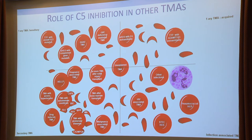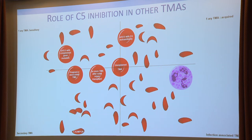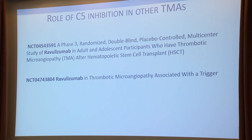What about C5 inhibition and other TMAs? This is why nomenclature is so important — different classifications mean different things to different people. In the clinical trials of eculizumab, most secondary causes disappear and you're left with people with mutations, pregnancy cases without a bleed, and a group where you just cannot find anything else. Currently there are a couple of Alexion trials — one on post-bone-marrow transplantation with ravulizumab, and another on secondary TMAs with an identified trigger. Yet to read out.